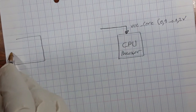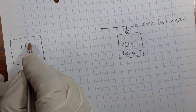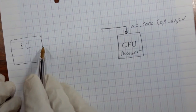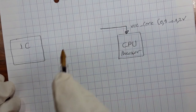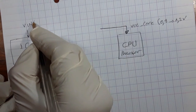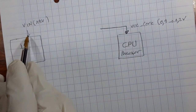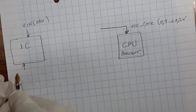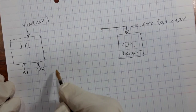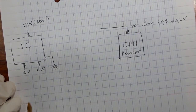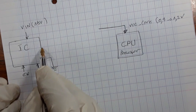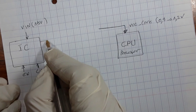The VCC core is coming from an IC — this is the CPU IC that generates this voltage. In order to generate this voltage there are many steps. This IC should be powered by V-in, about 19 volts, and then we have some signals like enable and clock, along with ground and others.